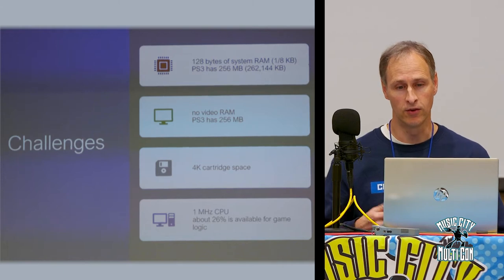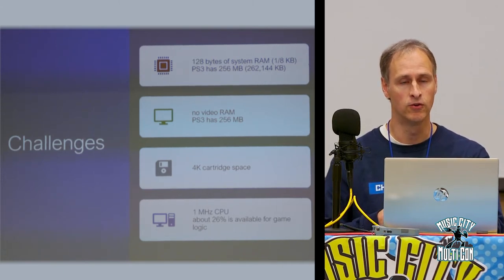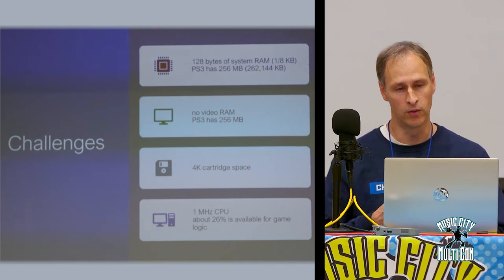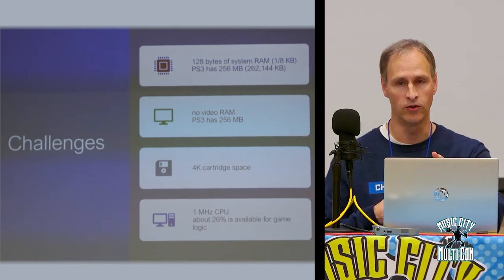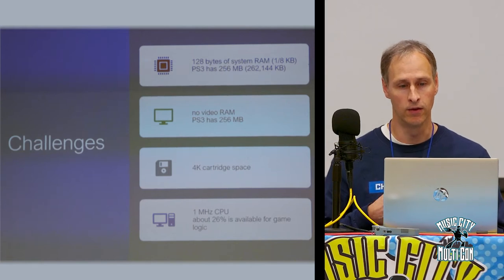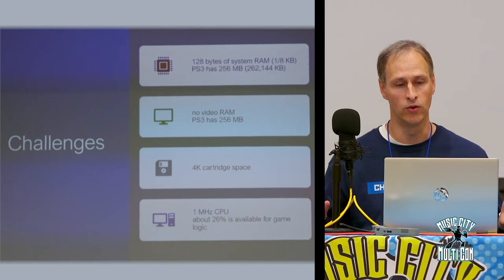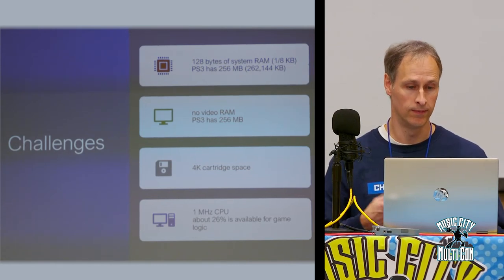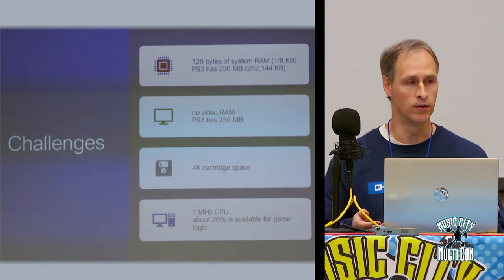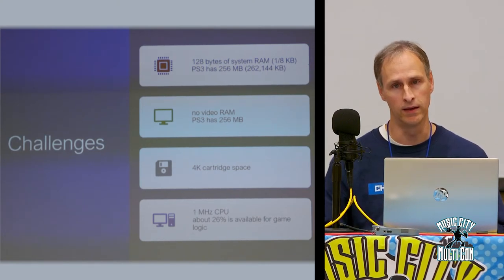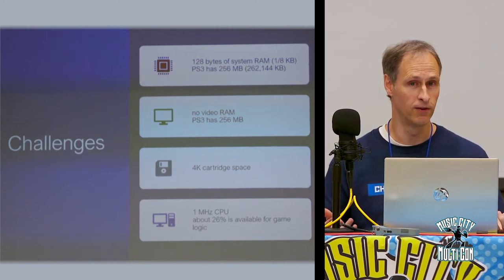Since there is no frame buffer, the entire time the screen is being drawn, the CPU is drawing the screen — you really can't do anything else. Out of 262 lines, maybe 200 are for display, and 32 are used for vertical blank and overscan. Those are the times where you use the 1 MHz CPU to run your game logic. You can only use the CPU for about 20% of the time for game logic; the other time it's pegged drawing the screen.